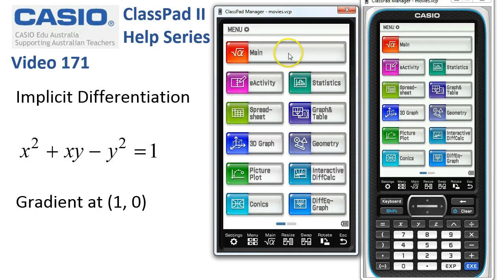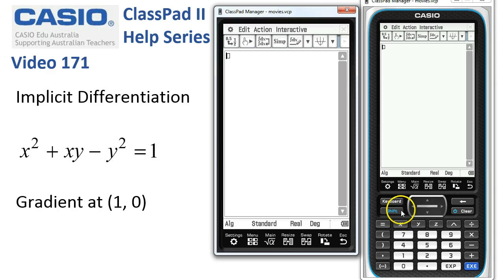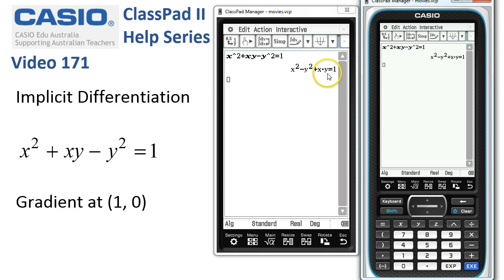Implicit differentiation. So we'll start in main and enter the implicitly defined function. Here it is: x squared plus xy minus y squared (y to the power of 2) is equal to 1, and tap execute just to check that everything's kind of as we thought it was.